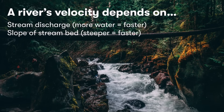Next is slope — is this a steep stream bed or a fairly flat one? A steeper slope is going to make the river flow at a faster velocity, because gravity is going to pull that water downhill faster.